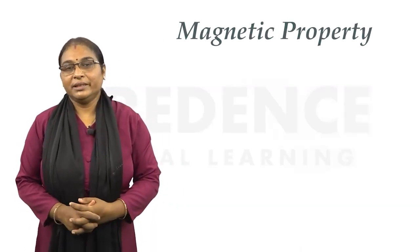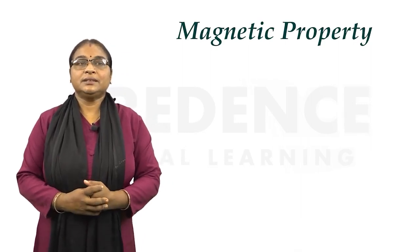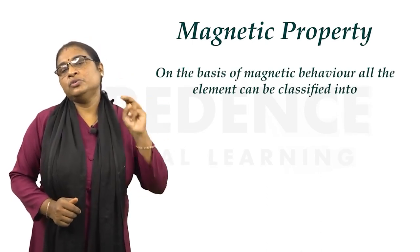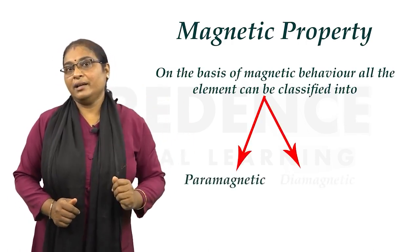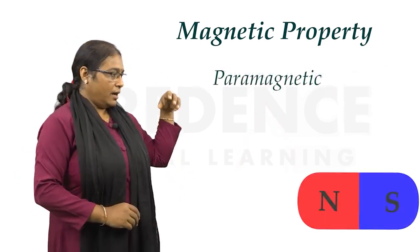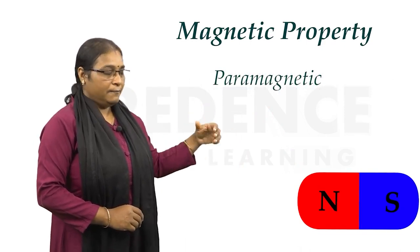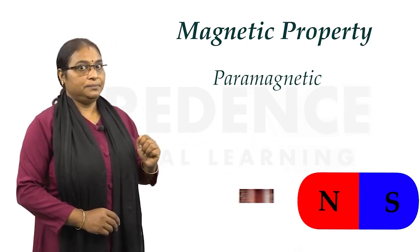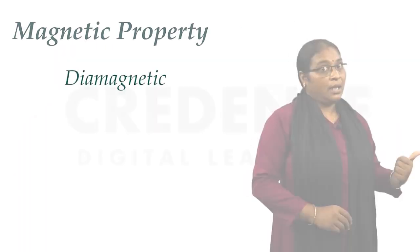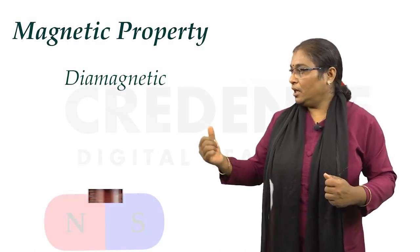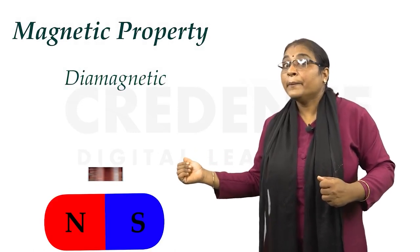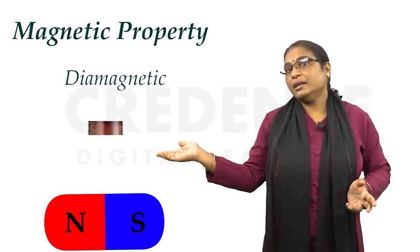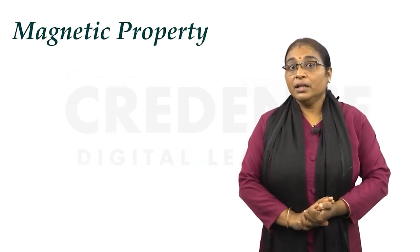The next property is the magnetic property, which is another important property of d-block elements. On the basis of magnetic behavior, all elements can be classified into two groups: paramagnetic and diamagnetic substances. Paramagnetic substances are attracted towards an external magnetic field, while diamagnetic substances are repelled from the external magnetic field.